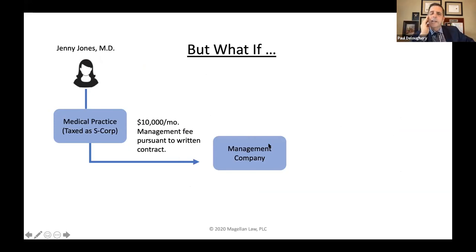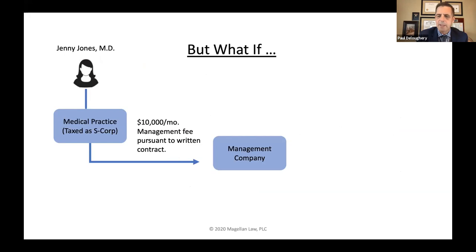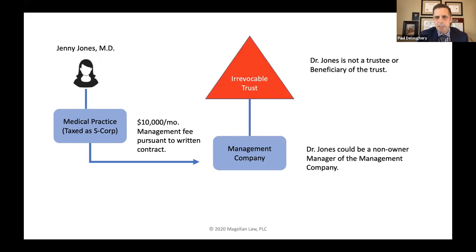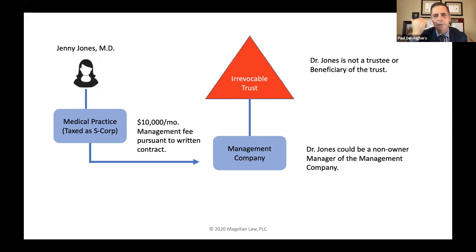What if she creates a management company — probably an LLC — and enters into a management agreement, maybe starting at $10,000 a month, with provisions that it can be changed on an annual basis? That management company can be owned by an irrevocable trust in which Dr. Jones is not the trustee and not a beneficiary. For example, maybe her father is the trustee and her kids, or if she doesn't have children, her nieces and nephews could be the beneficiaries.